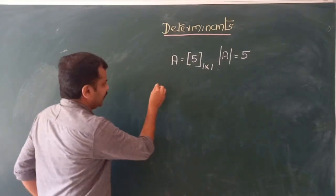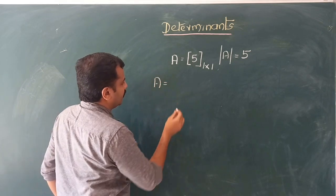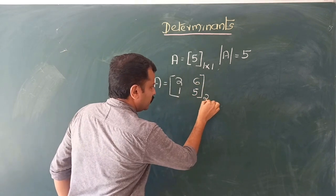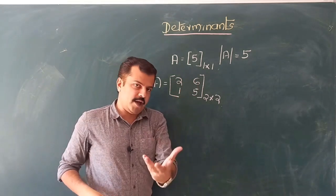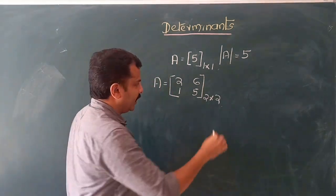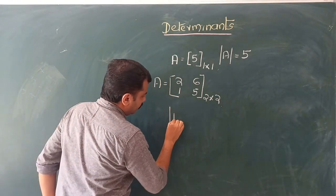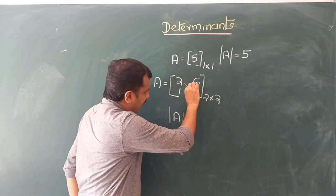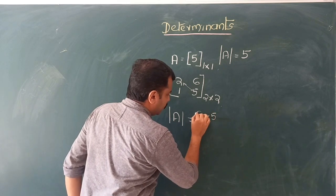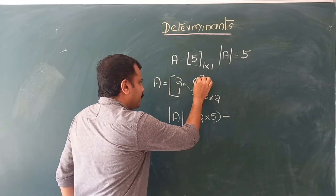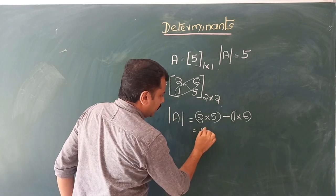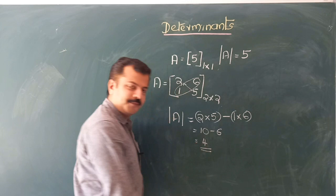Let us explore the case of a 2×2 matrix. Say our matrix A equals [2, 6; 5, 1]. This is a 2×2 square matrix with two rows and two columns. To calculate the determinant, we take the product of the diagonal elements minus the product of the off-diagonal elements: determinant of A equals 2×1 minus 5×6, which gives 2 minus 30... actually 2×5 minus 1×6 equals 10 minus 6, so the determinant of A is 4.